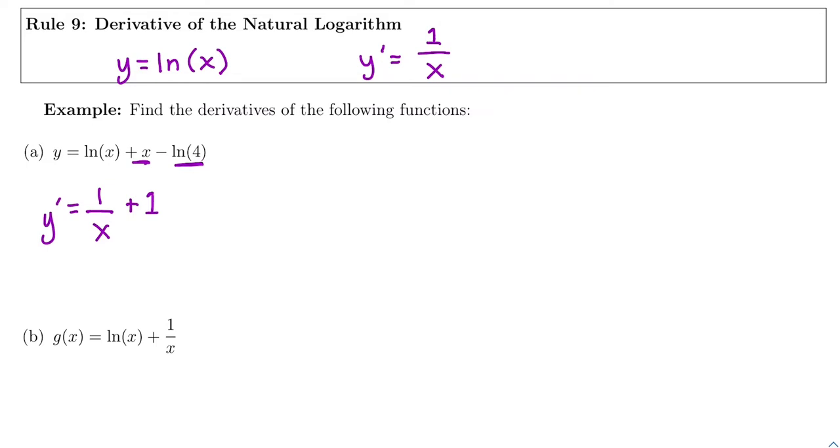There's no x on it. You can plug ln(4) into your calculator—it's good practice to try. You should get 1.386 and it keeps going. This is a constant. It doesn't have an x on it, so its derivative is 0. So our whole derivative is going to be 1 over x plus 1.